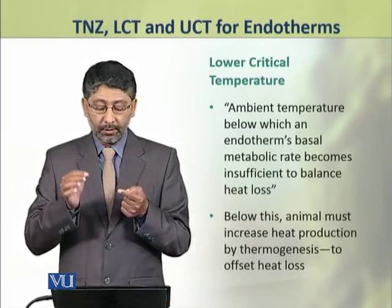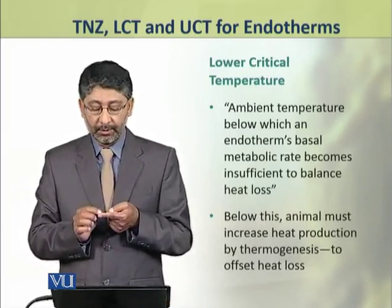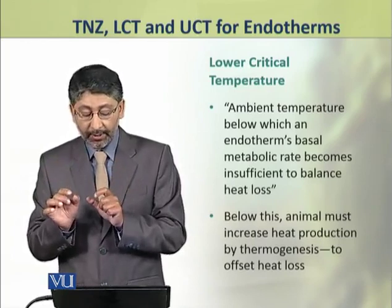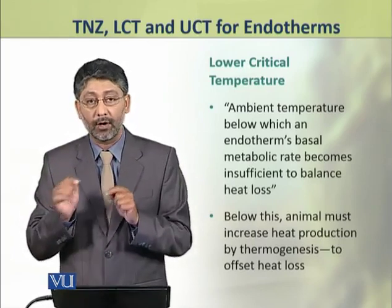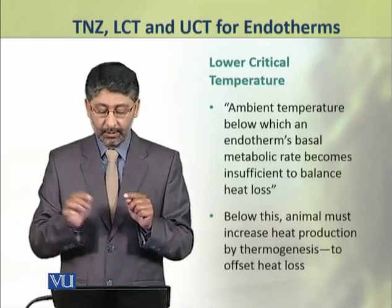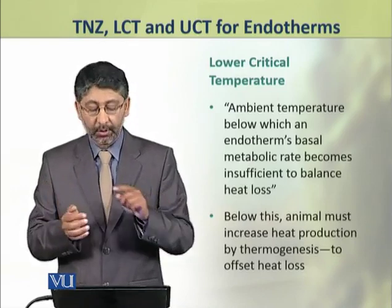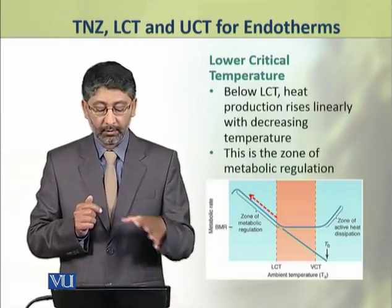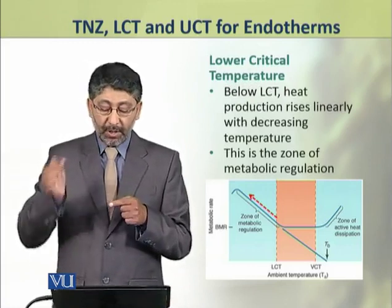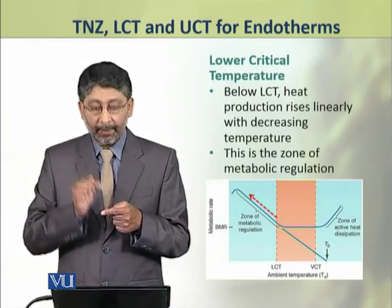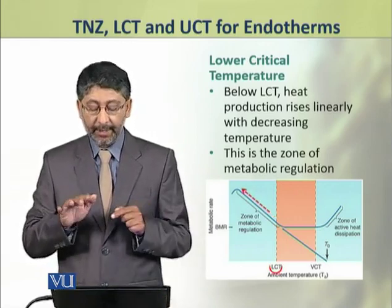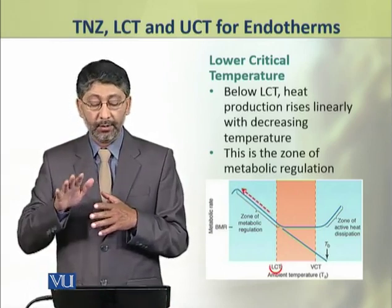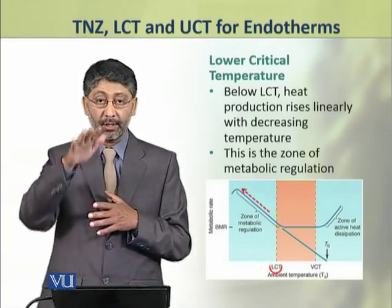Dear students, the lower critical temperature is the ambient temperature below which an endotherm's basal metabolic rate becomes insufficient to balance the heat loss. Below this, the animal must increase heat production by thermogenesis to offset the heat loss. This zone is known as the zone of metabolic regulation. Below the lower critical temperature, heat production rises linearly with decreasing temperature — juo juo temperature decrease karta hai usi hisab se thermogenesis ka process zyada heat production kara raha hota hai.